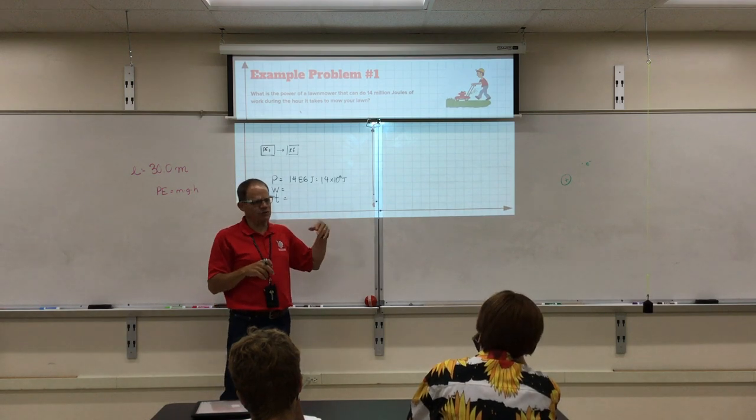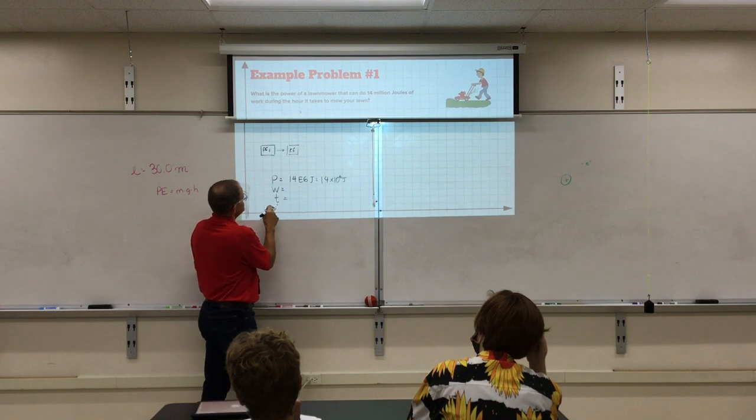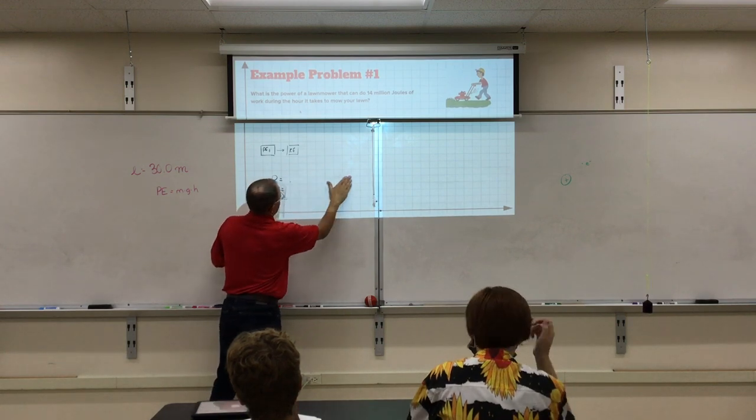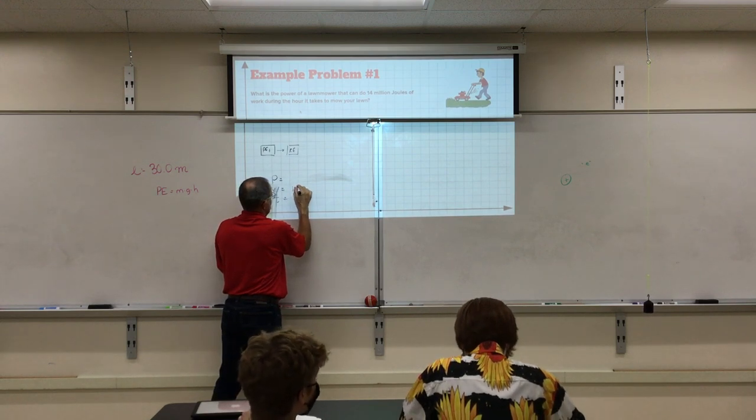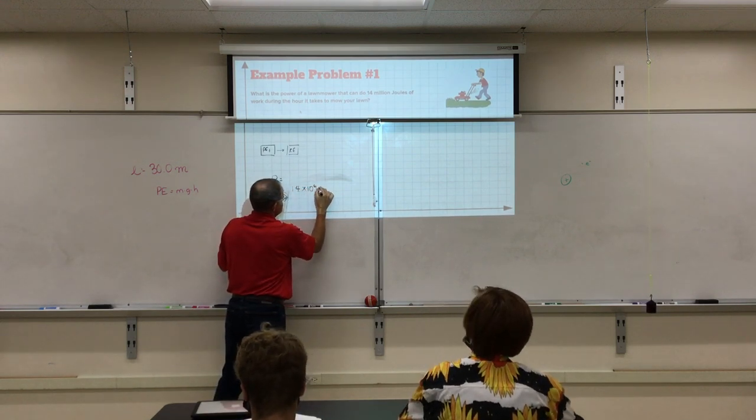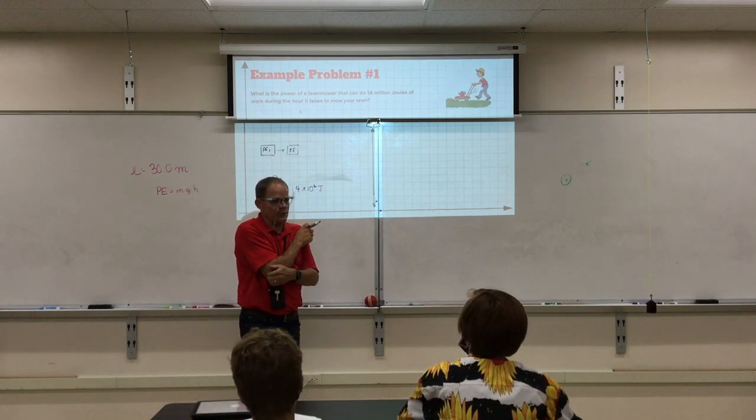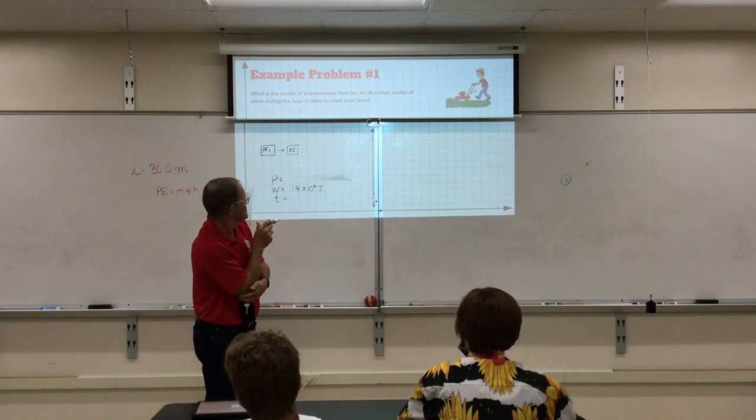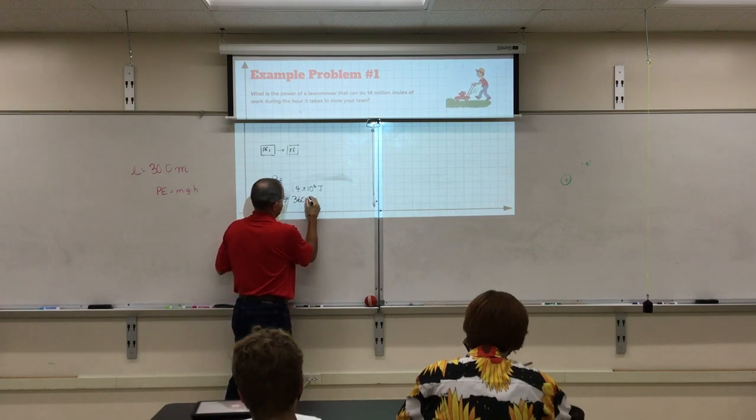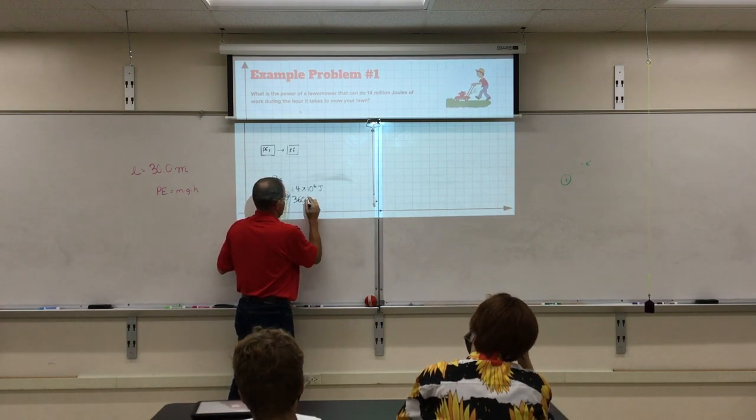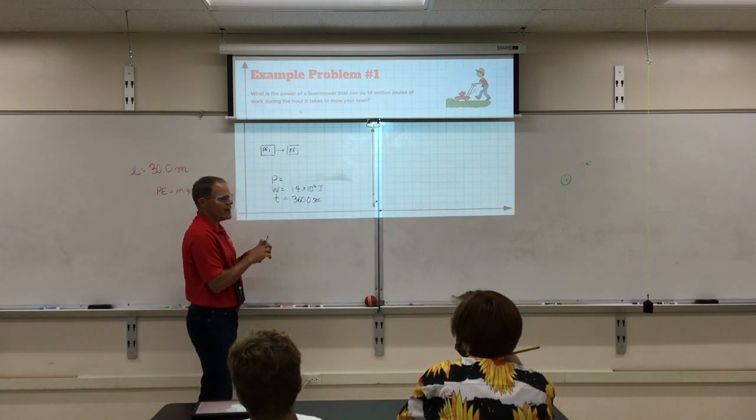But I don't like putting zeros in because I always put one too many or one too few in and I get it wrong. Alright, what else do we know? Wait, I just put in the wrong one after all that. It's the work. This is 1.4 times 10 to the 6th joules. And the time is an hour. But we've got to be careful. Time needs to be in seconds. So what are you going to put down here for the time? 3,600. Wow. 3,600 seconds. There's the time. We're trying to find the power.